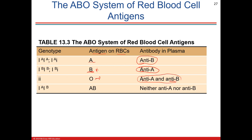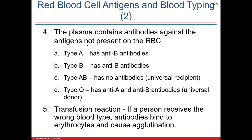The plasma contains the antibody against whatever antigen is not present. Type A has anti-B antibodies — it's going to destroy B blood. Type B is the opposite. Type AB has no antibodies — it's the universal recipient. Type O has both antibodies and is not a great acceptor. Agglutination is the binding of antibody to antigen in the lab. If you have type A blood and add anti-A antibody, it will agglutinate, confirming type A.